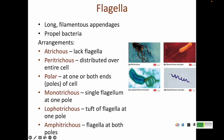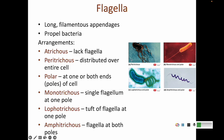Flagella are long appendages outside of a cell that help a bacterium move. We classify a cell based on what kind of flagella it has. If it has no flagella, it is atrichous — 'a' meaning none. Peritrichous bacteria have flagella distributed around the whole cell. 'Peri' means around, like a perimeter. So a peritrichous bacterium has flagella all over it.